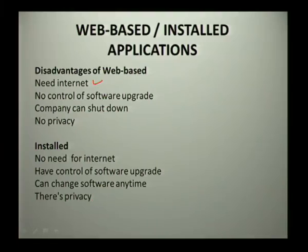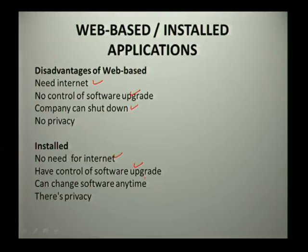Looking at disadvantages: web-based applications require internet access, whereas installed applications do not. With web-based, there is no control over software upgrades — if the company chooses to upgrade, you have no say — but with installed software you choose when to upgrade. The company can also shut down, meaning you lose access to the web-based software, whereas with installed software you can use it at any time. Finally, web-based offers less privacy, as owners, hackers, or stalkers may access your data, while installed software offers more privacy.